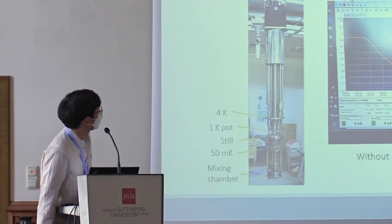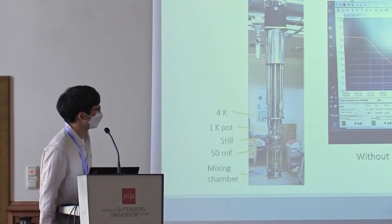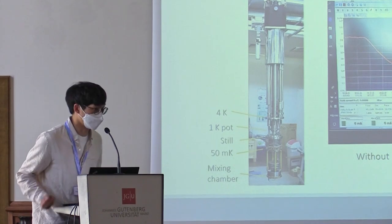Our dilution refrigerator from Leiden Cryogenics achieved a base temperature of 5.4 millikelvin without load. After mounting the cavity, the mixing chamber sits around 22 millikelvin. In the presence of the magnetic field, the cavity and mixing chamber are in the 20s millikelvin range.